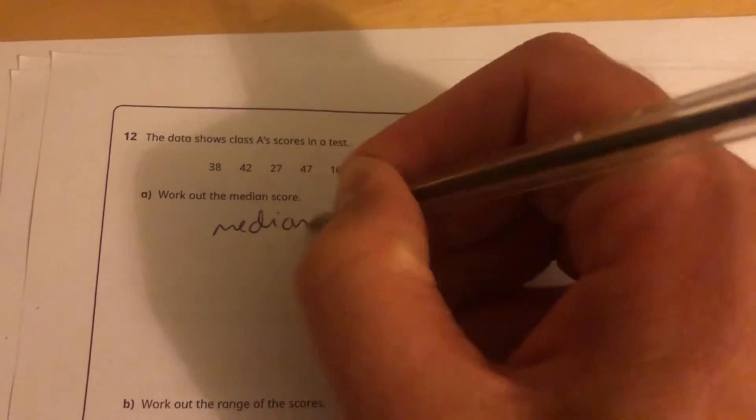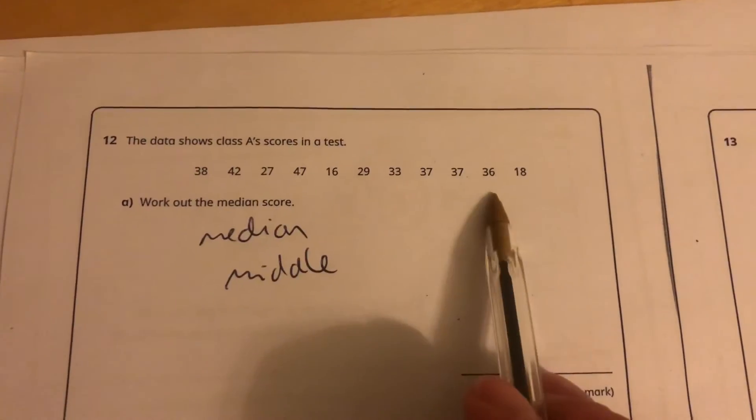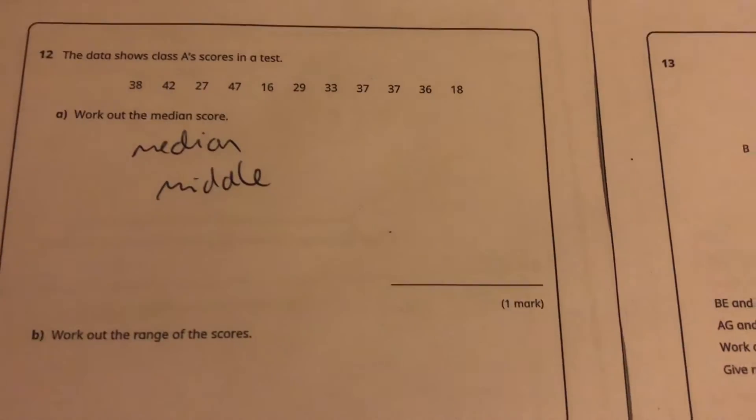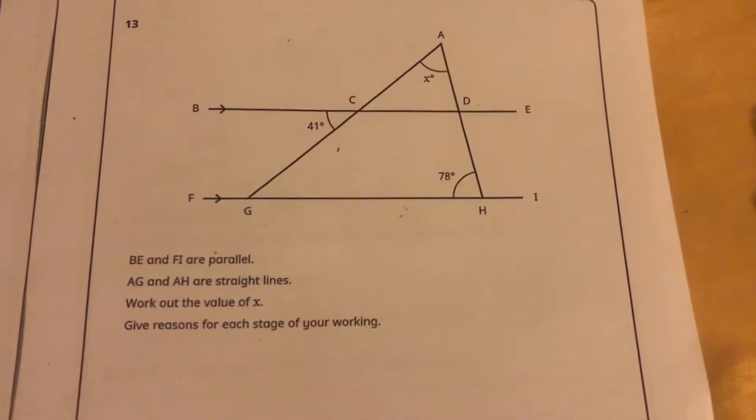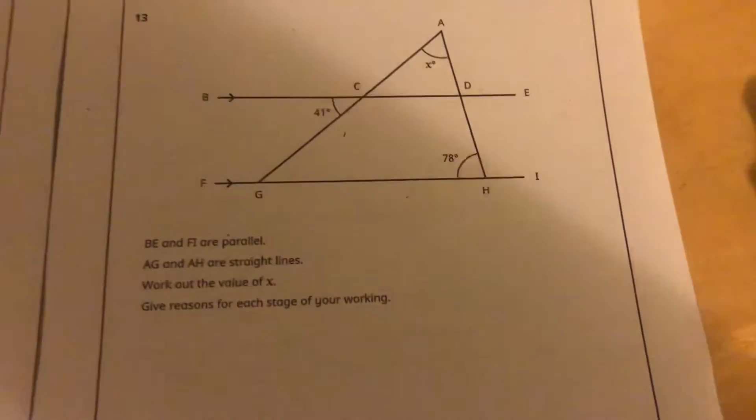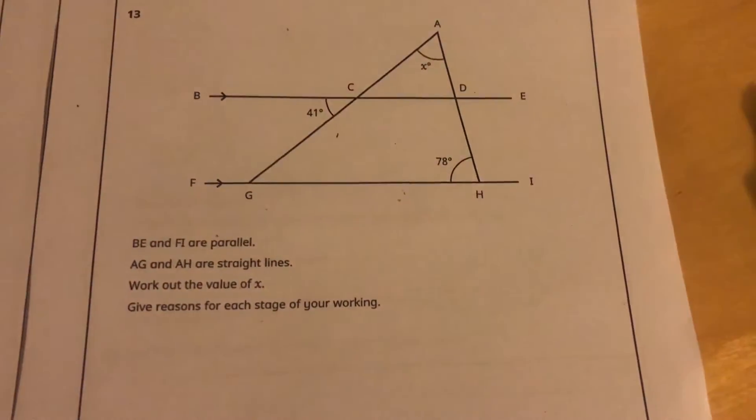This is a data question. They've asked to find the median, which is the same as the middle number. Unfortunately, the numbers aren't ordered. I'll have to order that. That'll take a bit of time. I'm going to come back to that one. And this is a parallel lines with triangles, an angles question. I know how to do this, but right now it's a formatted question. I'll come back to that when I've got some time. We've definitely got eight marks in about eight minutes.